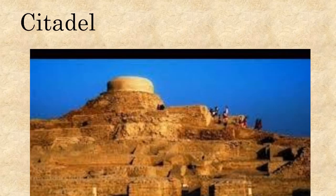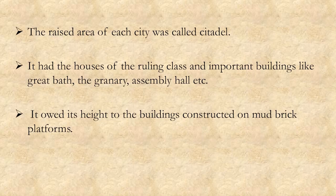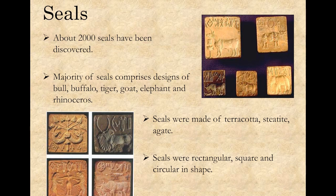The next structure is the Citadel. Each city had a citadel, built on a mud brick platform, which made it appear to be the tallest of other buildings. It had houses of the ruling class and important buildings like the Great Bath, granaries, and assembly hall.